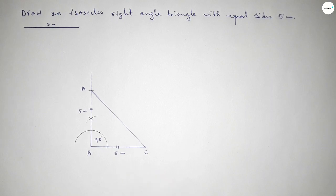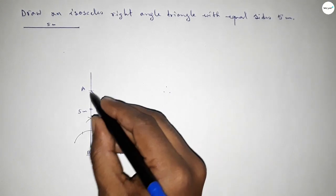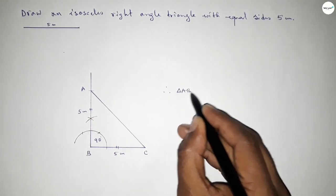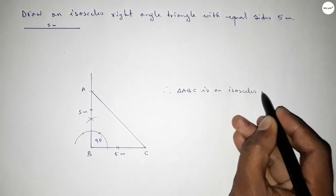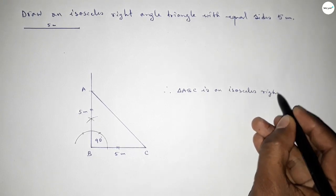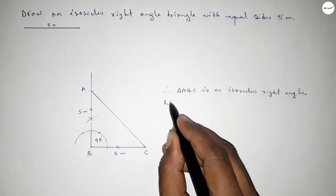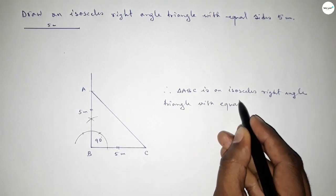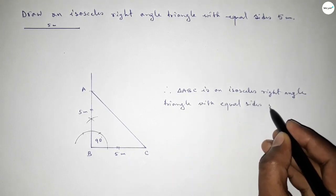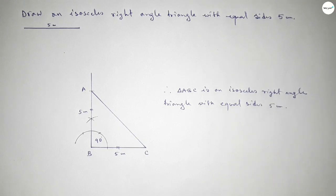This is 5 centimeters and this one also 5 centimeters. Therefore, triangle ABC is an isosceles right-angle triangle with two equal sides of 5 centimeters. This is the process to construct an isosceles right-angle triangle with two equal sides of 5 centimeters. That's all — thanks for watching. If this video is helpful to you, please share.